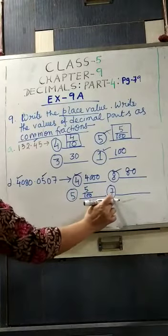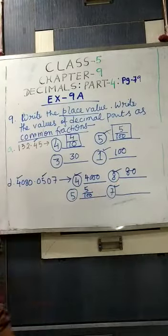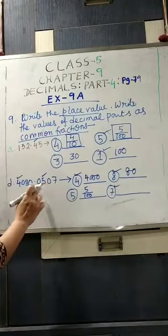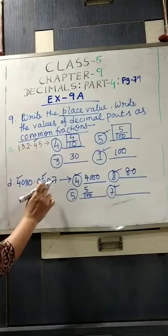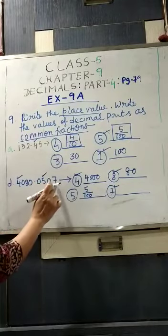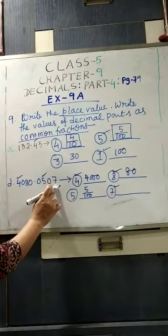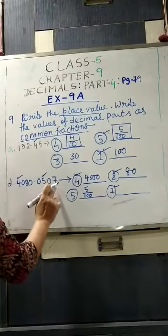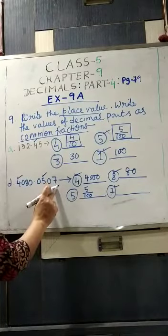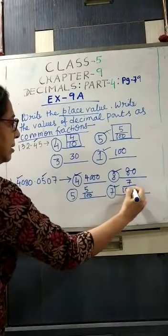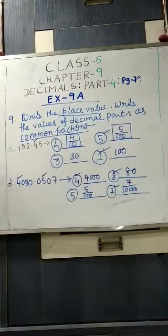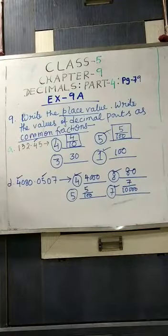And the last digit that is given? 7. 7 is in which position? Tenths, hundredths, thousandths, ten-thousandths. Position number 4, ten-thousandths. So you will write 7 by ten-thousandths. Clear?